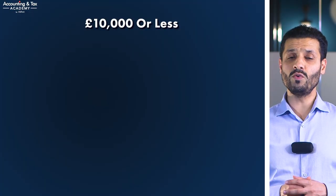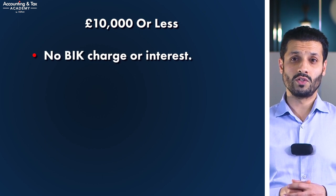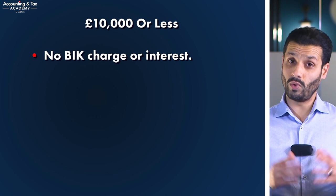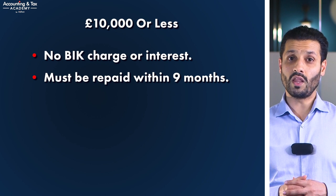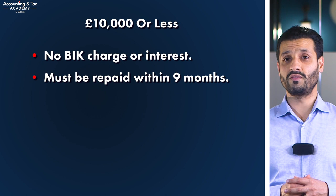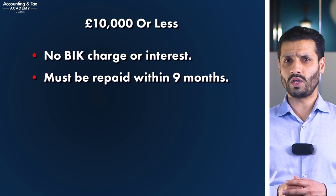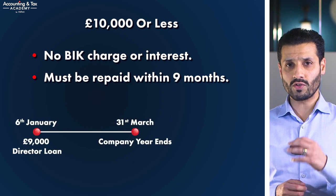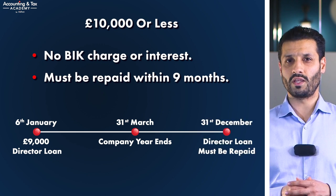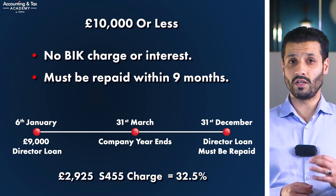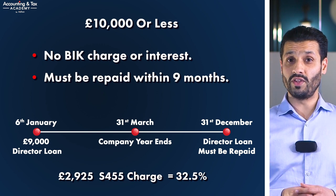The good news is that if you borrow £10,000 or less from your company, there is no benefit-in-kind charge or interest to pay to your company — in other words, it's an interest-free loan with a time limit. You will have to repay this loan nine months after the end of your company year, otherwise your company will be subject to the Section 455 tax charge at 32.5% of the outstanding loan amount. For example, if your company year-end is 31st March and you took a £9,000 loan on 6th January, you will have until 31st December to repay the loan, or your company will face a £2,925 Section 455 charge — that's 32.5% of the £9,000 loan.